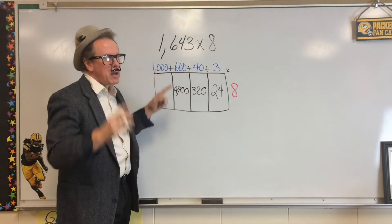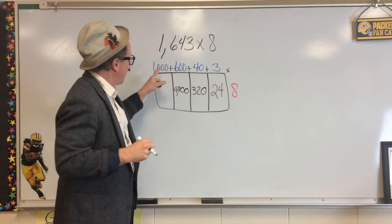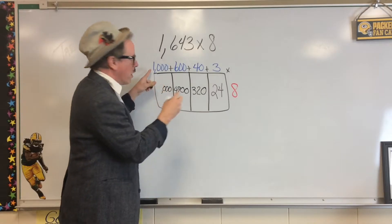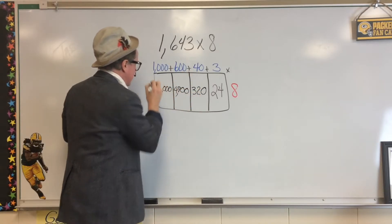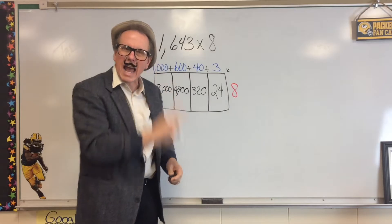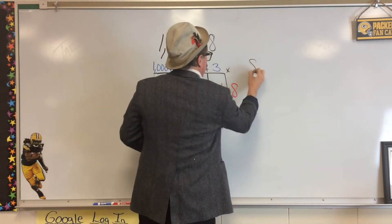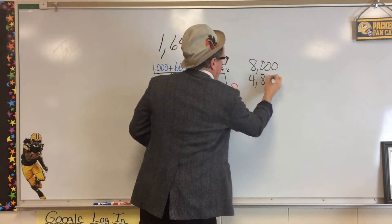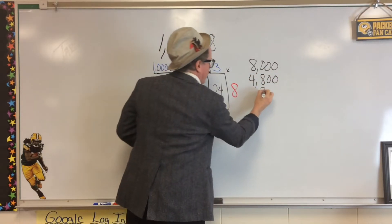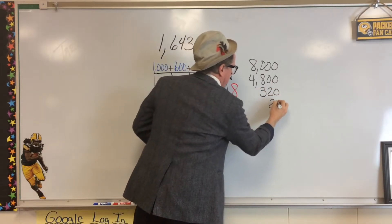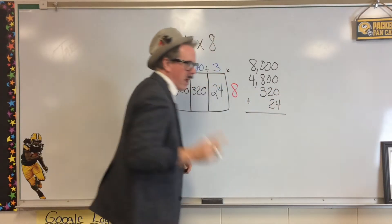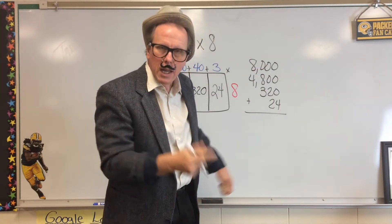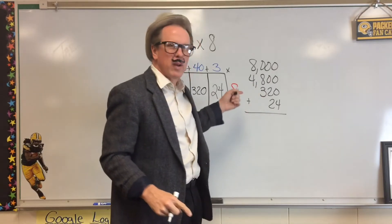And in our last one — remember, how many zeros do you see? I see three zeros. And 1 times 8 is 8, giving us 8,000. Now what we have to do is add them all together. So we have 8,000 plus 4,800 plus 320 plus 24. Very important, everyone, to keep our place values in the right spot. Let's do some adding, and you'll see how easy it is.